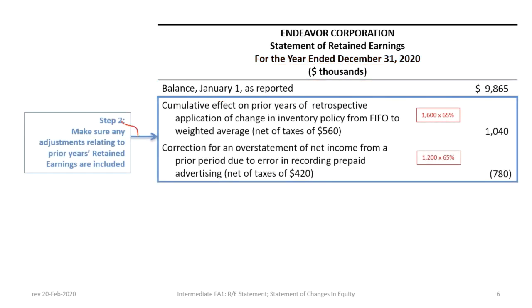The next step is to ensure any adjustments related to prior years are corrected against the beginning retained earnings balance. In our Endeavor example there are two corrections. First, there is a cumulative effect of the change in inventory policy from FIFO to weighted average, determined to be $1.6 million on a before-tax basis, meaning this policy change resulted in $1.6 million higher income before tax in prior years. All adjustments to retained earnings must be presented net of tax, so with a 35% tax rate the applicable tax is $560,000, resulting in a net change to prior periods of $1,040,000. We make these corrections to retained earnings because we cannot reopen previous accounting periods.